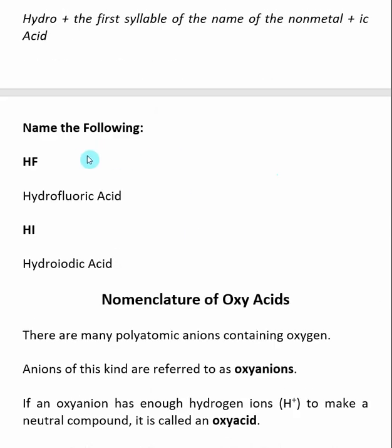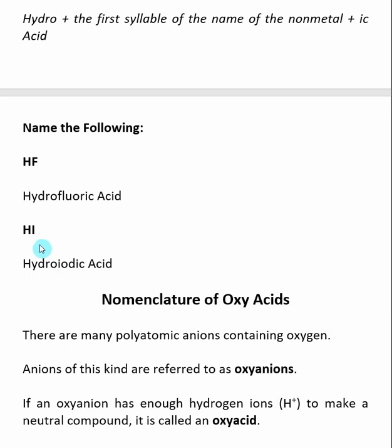When we look at examples: HF is a binary acid because there are only two elements involved. So we name it 'hydro' for the hydrogen, then the first syllable of the element it's attached to, which is fluorine or 'fluor', and then you add 'ic acid' on the end. Same thing for HI — it's a binary acid because there are only two elements. Put down 'hydro' to indicate the hydrogen, then the first syllable of what it's attached to, which is iodine or 'iod', and then add 'ic acid' to the end.